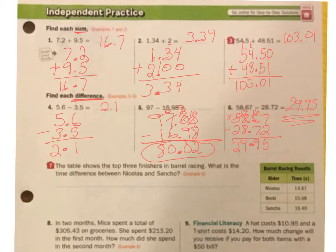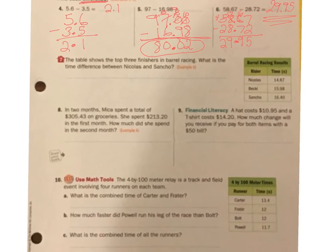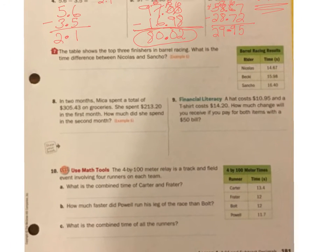Hopefully you got 1 through 6 all good. The table shows the top three finishers in barrel racing. What is the time difference between Nicolas and Sancho?